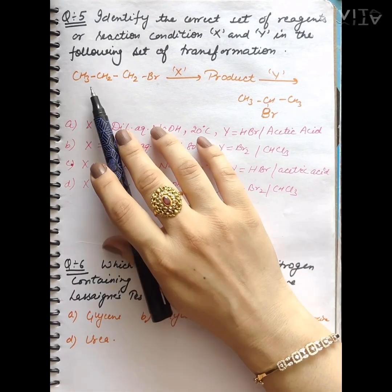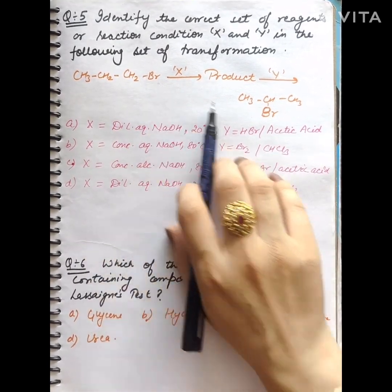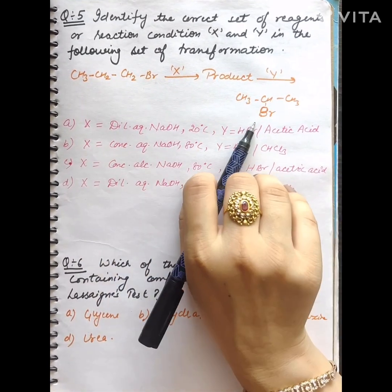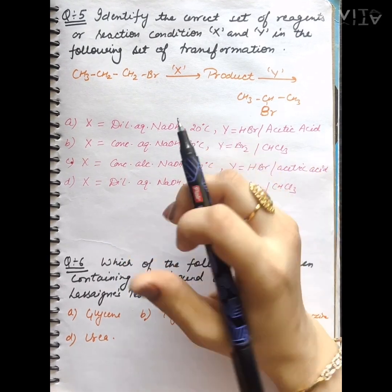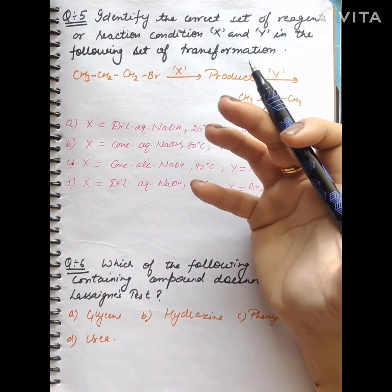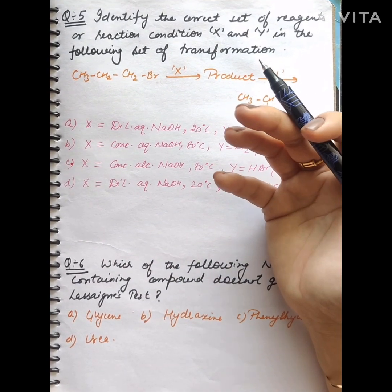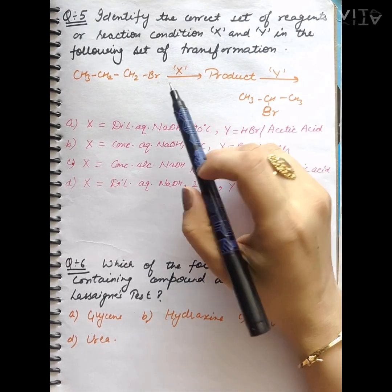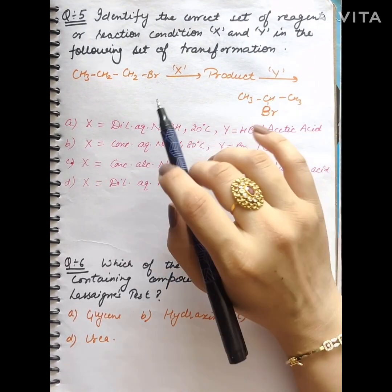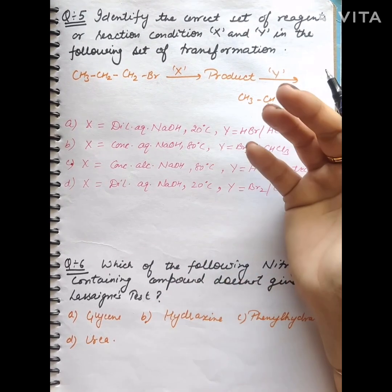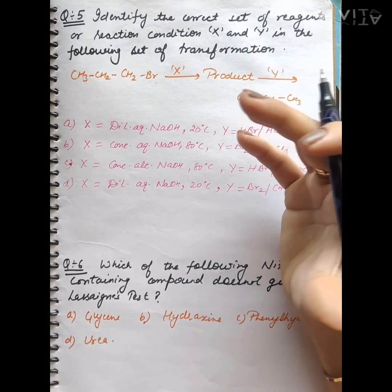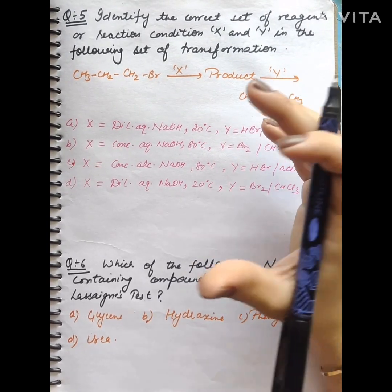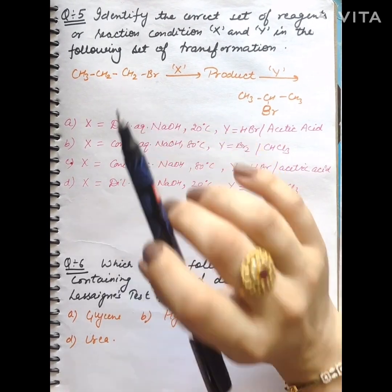Let's see a simple thing here. If we look at the reactant and product here, then we have a position of Br. Where does the position change? I already discussed when NCERT exercise was done. When we change the position of halogen, first of all we react with alcoholic base for elimination,